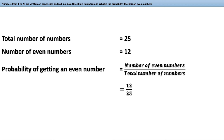What is the probability of getting a multiple of 3? From 1 to 25, how many multiples of 3 are there? 8 times 3 is 24, which means there are 8 multiples of 3 up to 25. Therefore, the probability of getting a multiple of 3 is the number of multiples of 3 divided by the total number of numbers — that is 8 by 25.